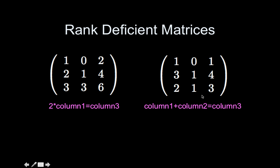The second matrix here is rank-deficient because if I sum the two, so that's a linear combination, linear combination just means multiply it by a number, a scalar, and add it to another column multiplied by a scalar.